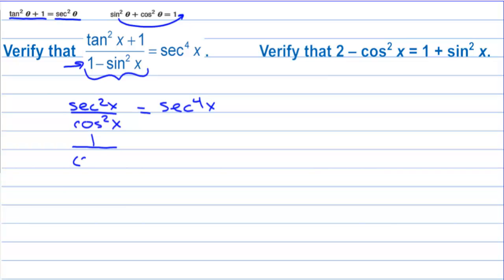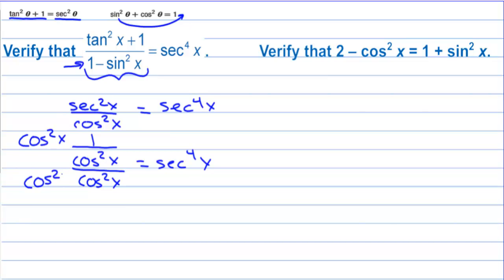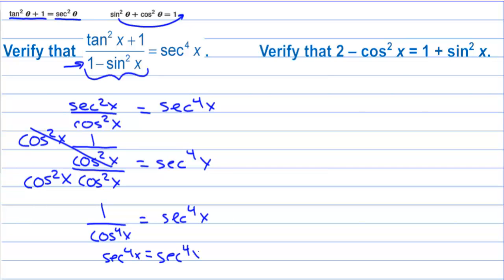Secant is one over cosine squared x, and that's over cosine squared x. We can multiply the top and bottom by cosine squared x to get rid of the complex fraction. That gives us one over cosine to the fourth of x, which is equal to secant to the fourth. One over cosine to the fourth is secant to the fourth — verified.